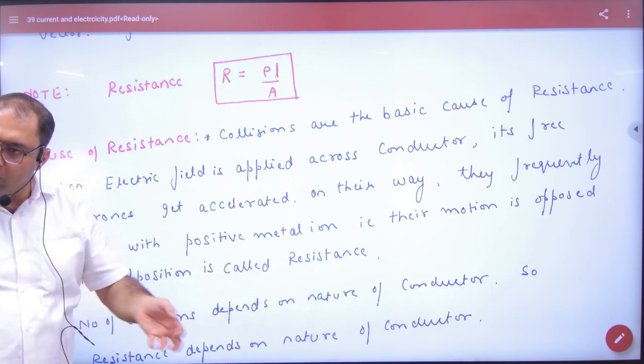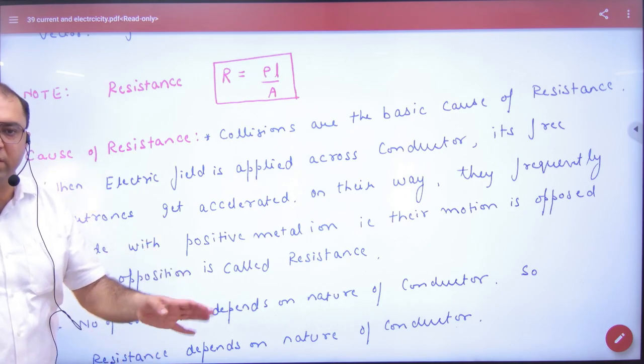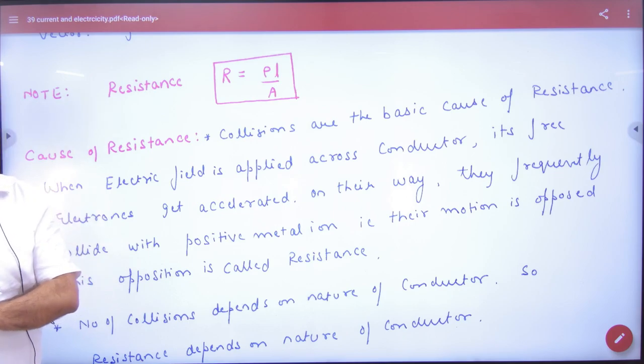More collisions mean higher resistance. Fewer collisions mean lower resistance. If by chance there are no collisions, which doesn't happen, there would be no resistance. But that can't happen, collisions will occur.